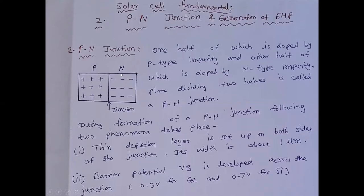Now, barrier potential Vb is developed across the junction. And it is 0.3 volt for germanium and 0.7 volt for silicon.